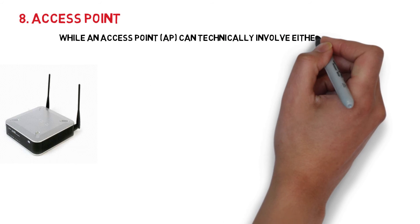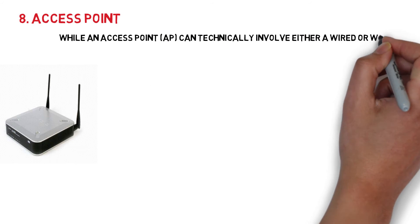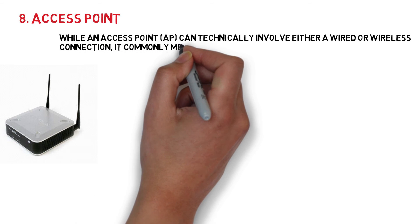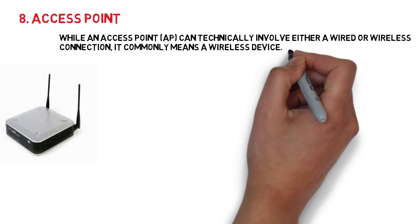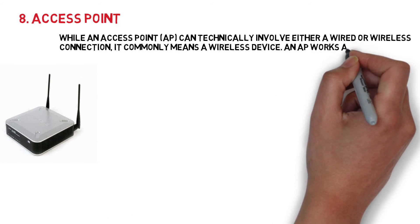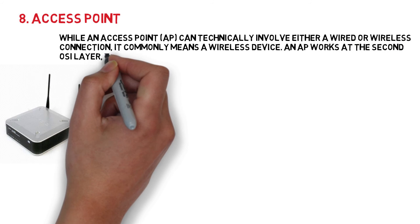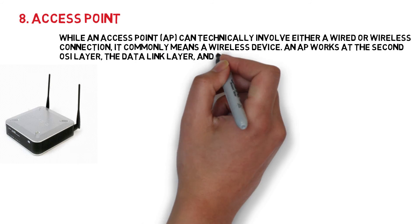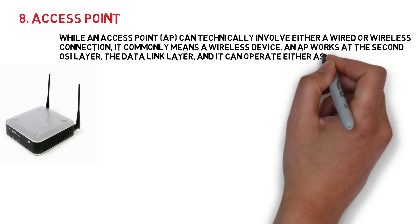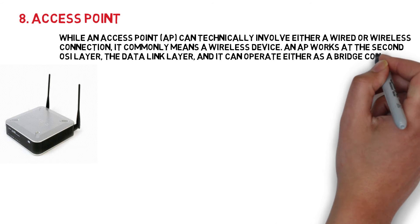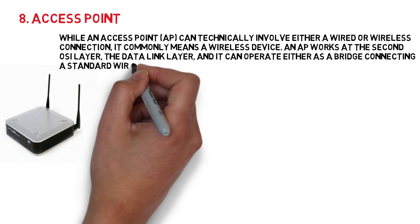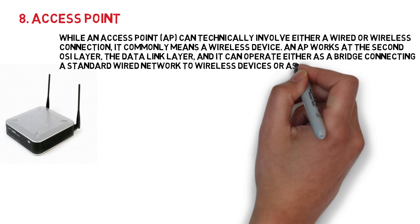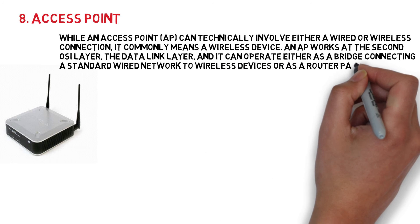8. Access Point. While an access point can technically involve either a wired or wireless connection, it commonly means a wireless device. An access point works at the second OSI layer, the data link layer, and it can operate either as a bridge connecting a standard wired network to wireless devices or as a router passing data transmissions from one access point to another.